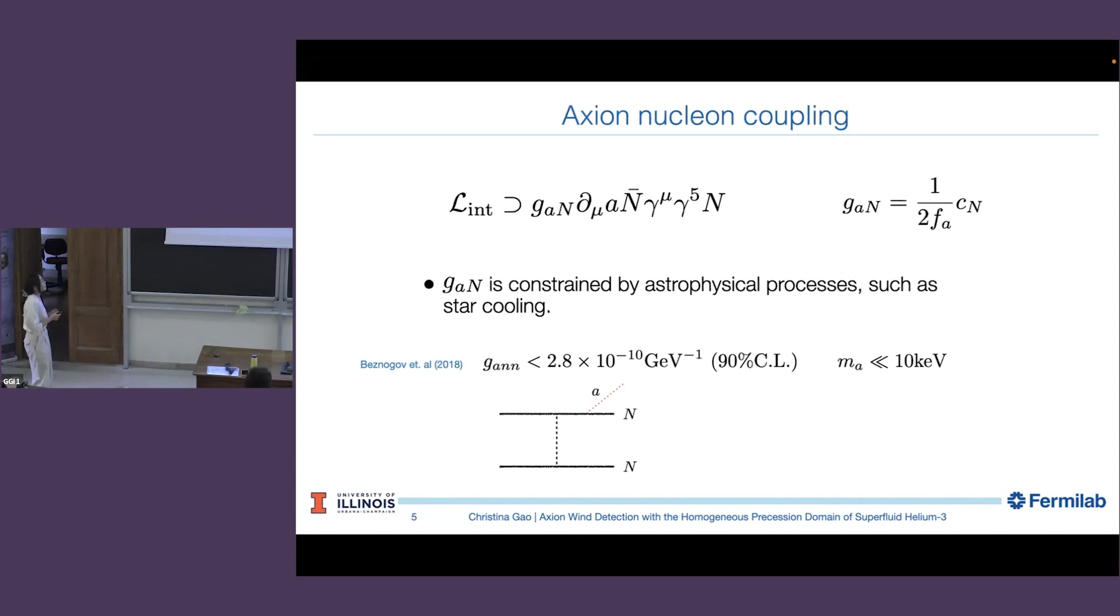Axion-nuclear coupling. Effectively, GAN is the dimension-four interaction with dimension one over mass. We can write it where FA is the breaking scale for the axion Peccei-Quinn symmetry, and CN is the model-dependent parameter. We're going to treat them as a universal coupling between protons and nucleons. This coupling allows you to probe axions already.